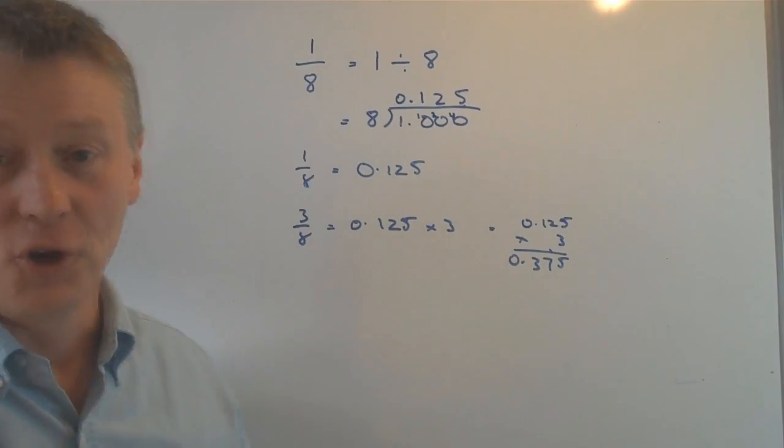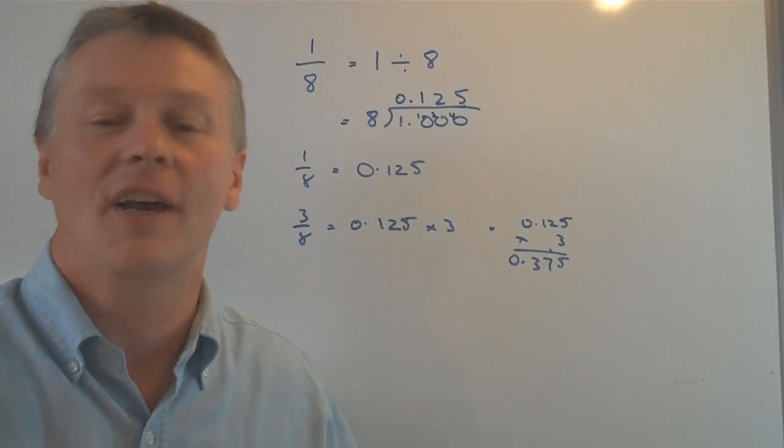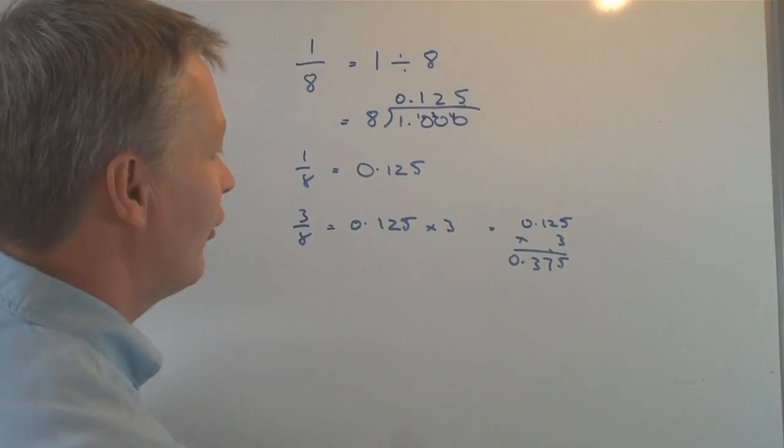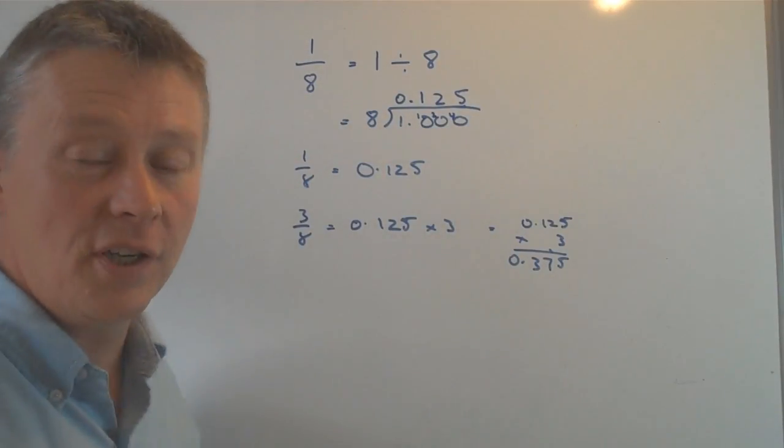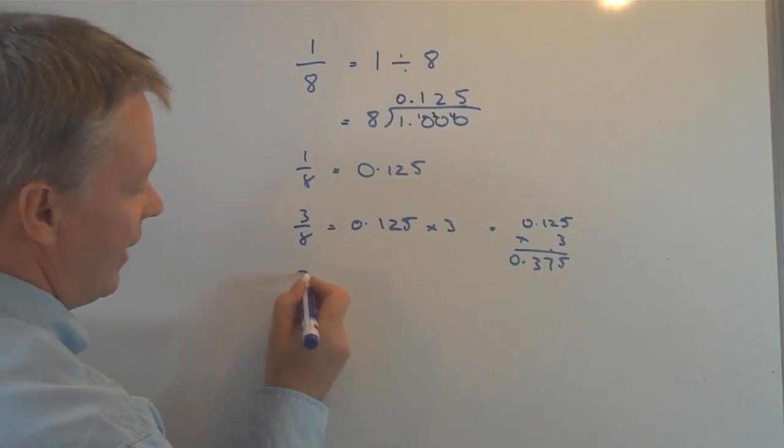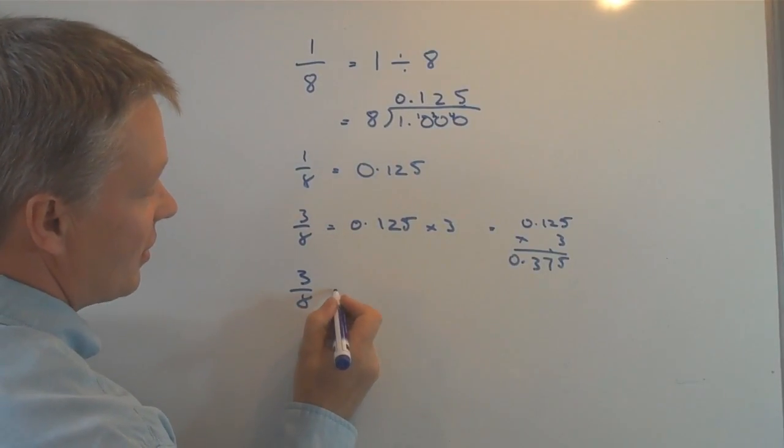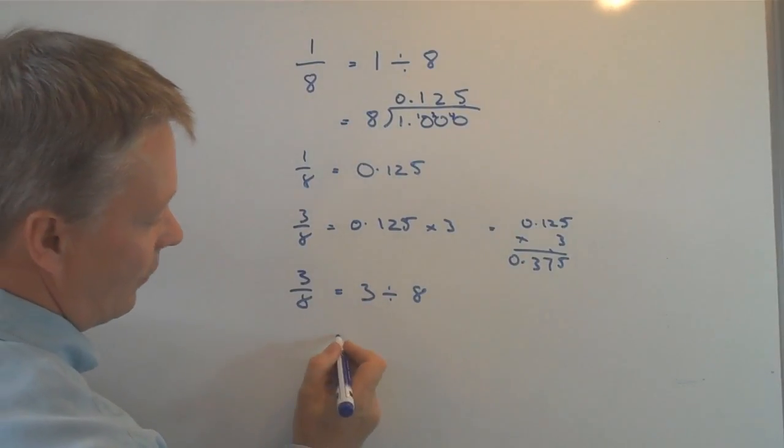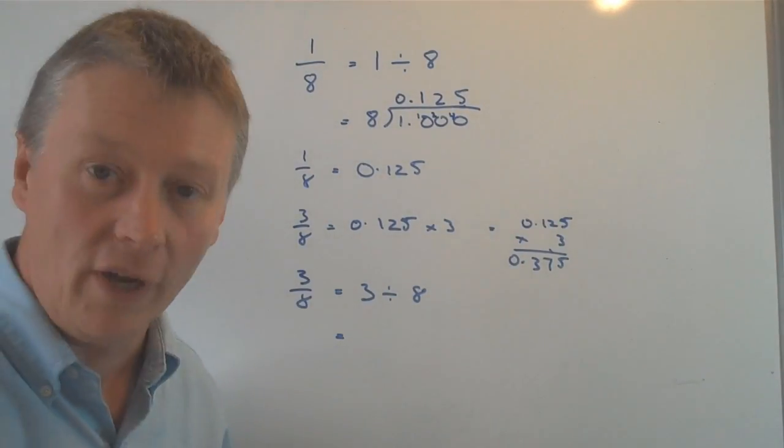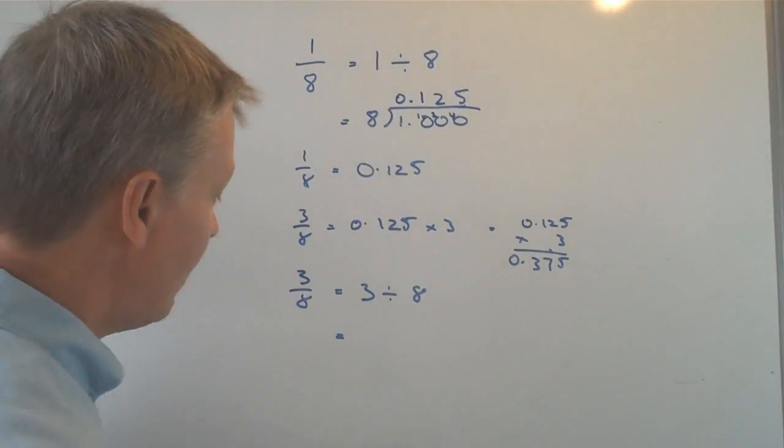So, the answer is 0.375. So, that's a way that you could do it. However, if we go back to our original idea, which is to say that three-eighths is the same as three divided by eight, which is the same as writing it as short division.